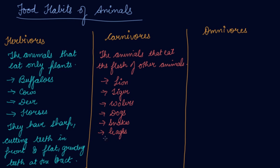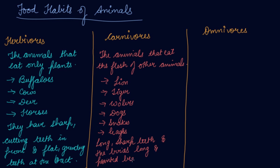Carnivores have long, sharp teeth. Birds have strong, sharp beaks — long and pointed beaks. Snakes have small teeth which are used only to help in swallowing prey as a whole. Snakes do not chew their food; they swallow the prey whole.